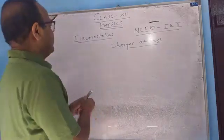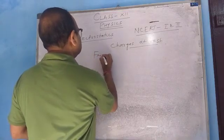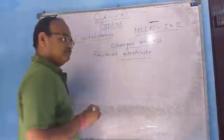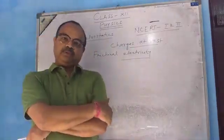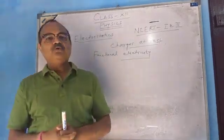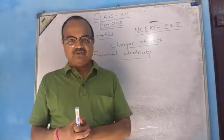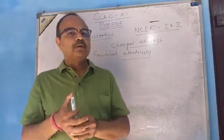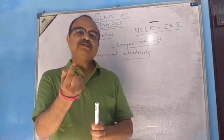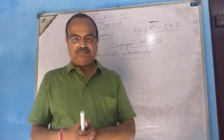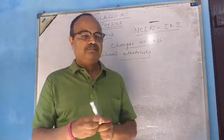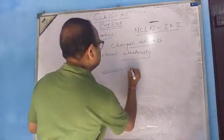We are starting this chapter with a topic called frictional electricity. What is frictional electricity? It is the electricity or charge which is developed due to friction — due to the rubbing of two substances. A very common phenomenon: if a plastic comb is rubbed with dry hair, friction occurs and the plastic comb starts attracting small pieces of paper. We say the plastic comb has become charged.